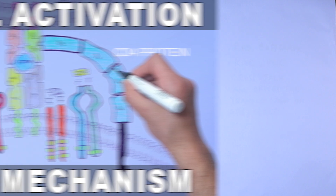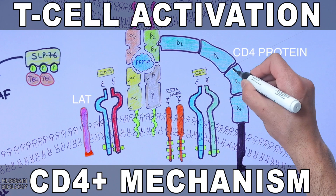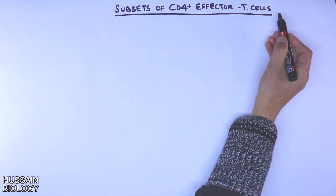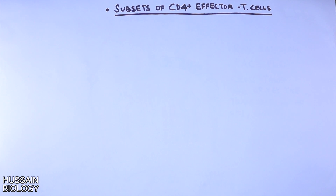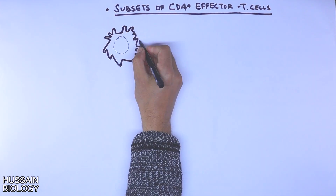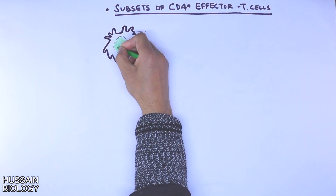In the previous video we discussed about T cell activation and the interaction of naive T cells with APCs. If you want to watch that video first, the link is in the description. In this video we'll be discussing the subsets of CD4 effector T cells, or the differentiation of T helper cells into various subsets. Differentiation is induced when we have the interaction of a naive T helper cell with antigen presenting cells.